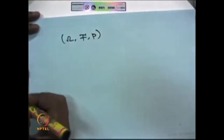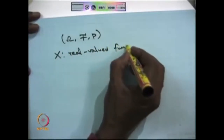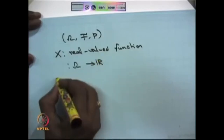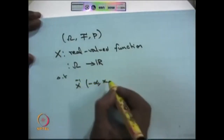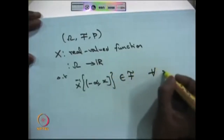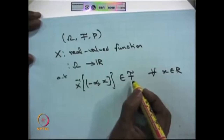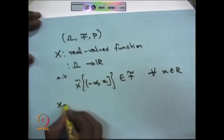We are moving into the next concept called the random variable. You have a probability space, and you are defining a real-valued function which maps omega to R, such that the inverse image of any x in the real line from minus infinity to x belongs to F. If this condition is satisfied by any real-valued function mapping from omega to R, then it is called a random variable.